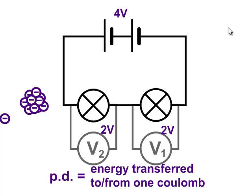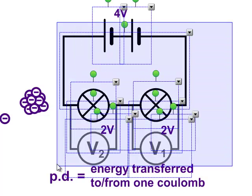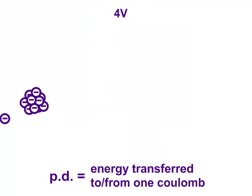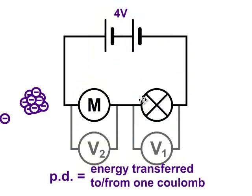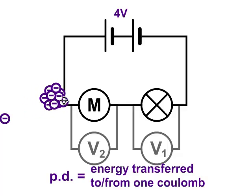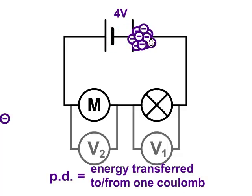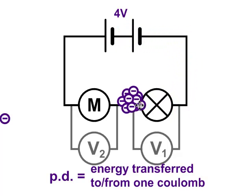We could replace this circuit with a slightly different circuit which doesn't contain two identical components. This circuit contains a bulb and a motor which are completely different from each other. As the charge flows around this series circuit, it picks up energy at the cells and shares that energy out between the components.